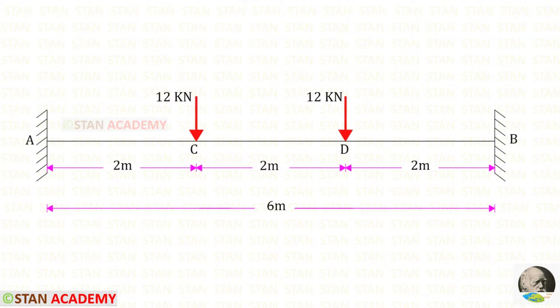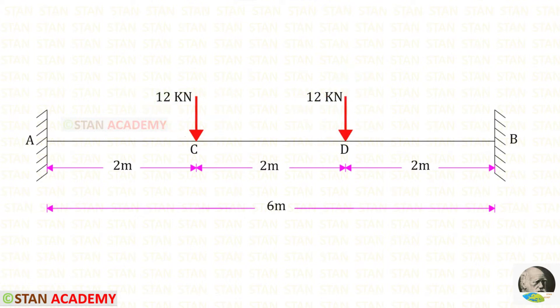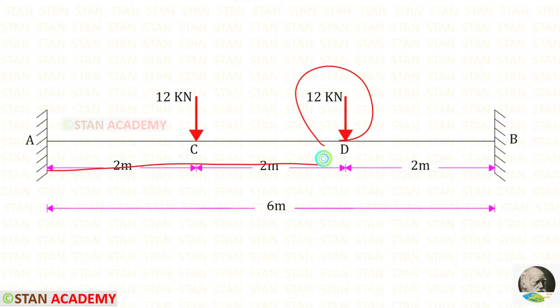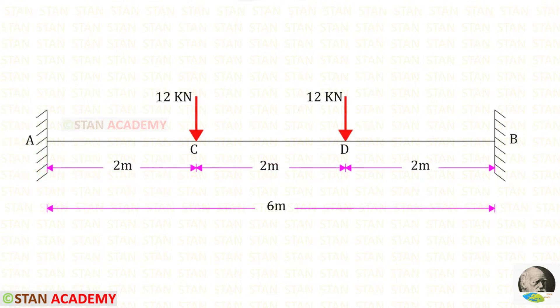In this beam there are two point loads. Both of them have the same magnitude of 12 kilonewton. This load is acting at a distance of 2 meter from point A, and this load is acting at a distance of 4 meter from point A. In this beam we have symmetrical loading. The total length of the beam is 6 meter.